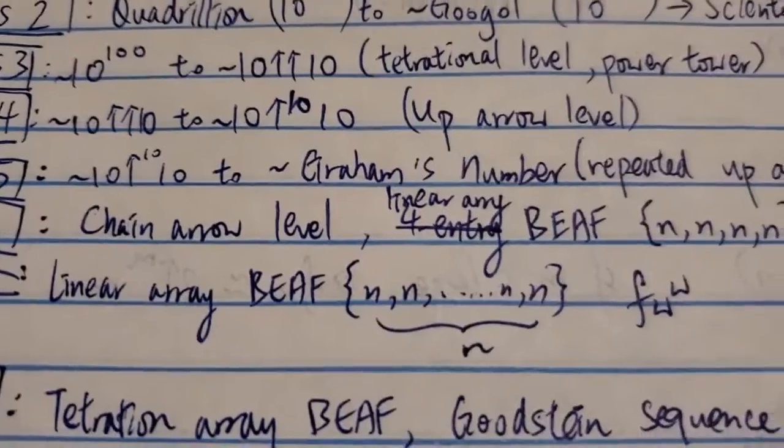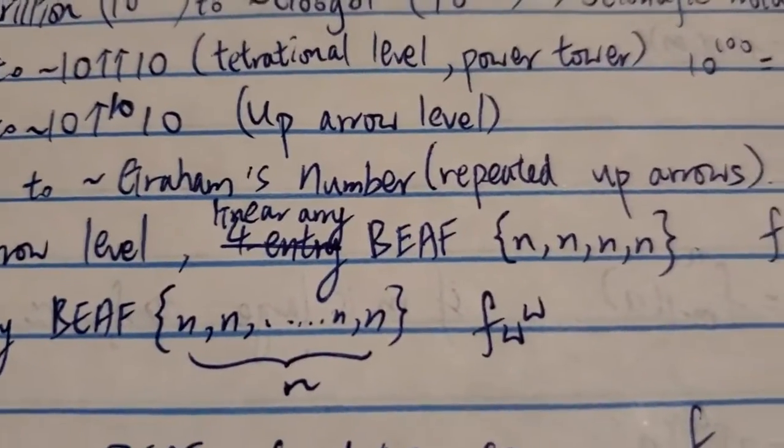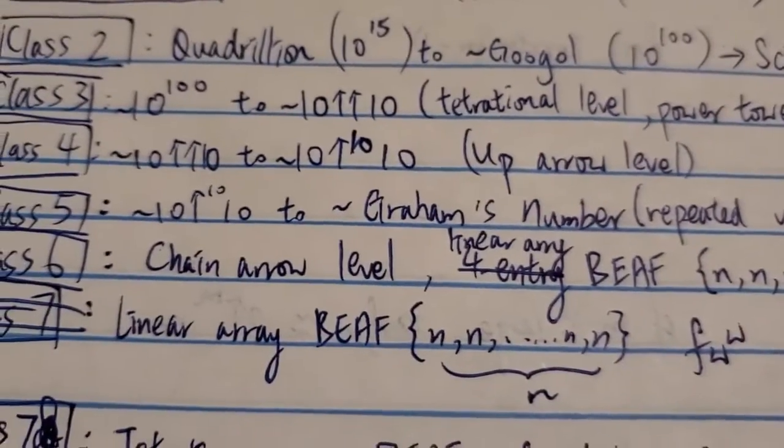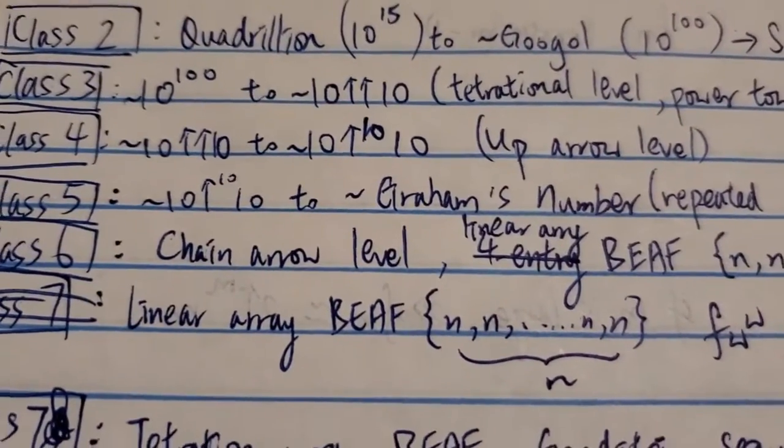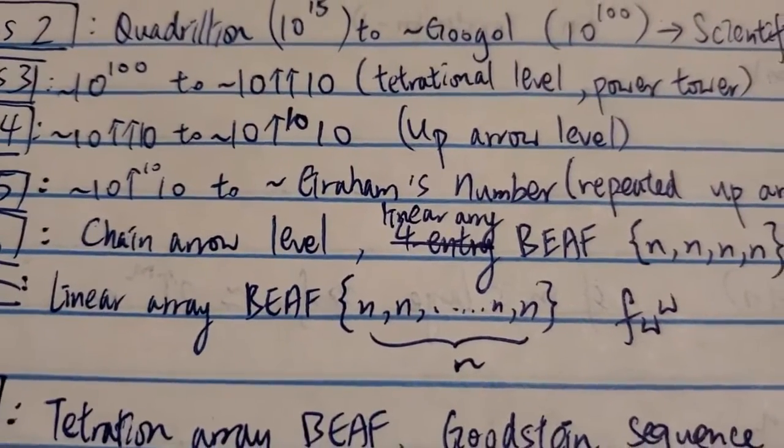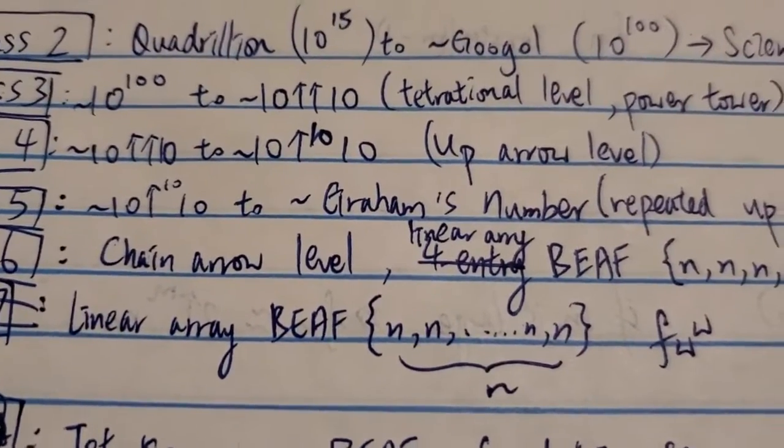So linear BEAF, something like that, it has a growth rate up to f of omega to the omega. And same thing for some extensions for the chain arrow notation that also grows up to f of omega to the omega.